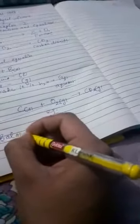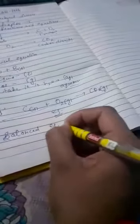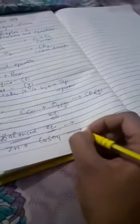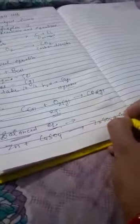Next is balanced equation. Why equations are balanced? If we take zinc plus copper sulfate then it will form zinc sulfate plus copper.